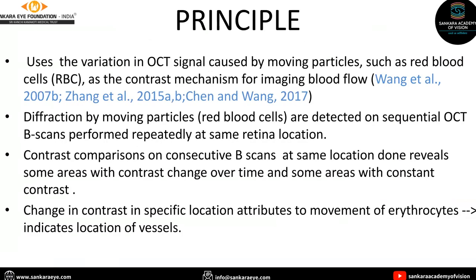Coming to its principle — we are not using any dyes. Instead, we are making use of the moving particles in our eye, such as red blood cells, as the contrast mechanism for imaging blood flow. The diffraction by the moving particles is detected on sequential OCT B-scans performed at the same location. We get areas with contrast change over time and some areas with constant contrast. The change in contrast at a specific location attributes to the movement of erythrocytes, thereby indicating the location of the vessels.